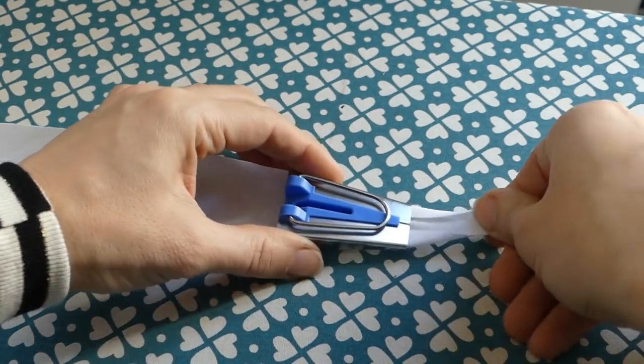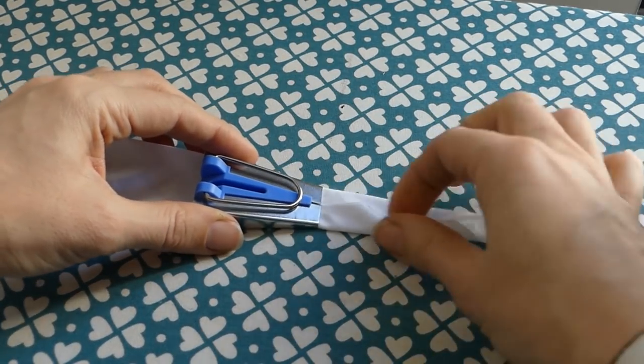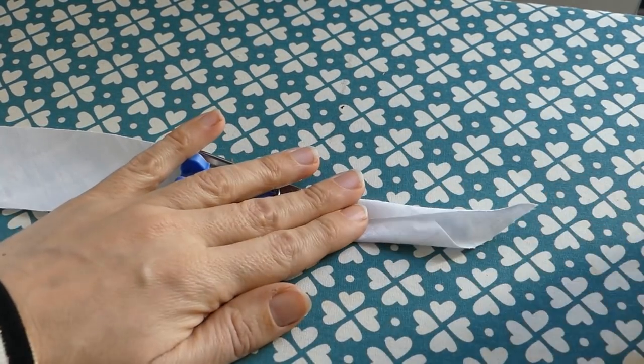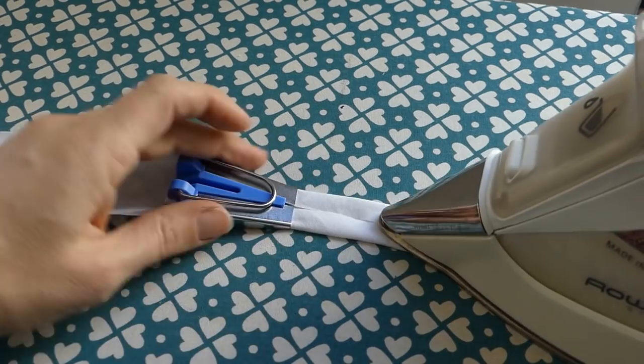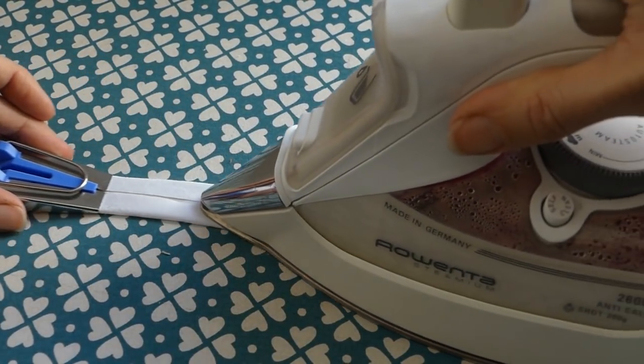put in the strip, pull it through and just iron over it. It's really easy. The result is a single fold one inch wide bias tape.